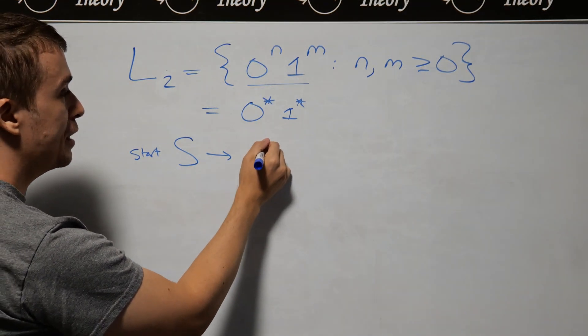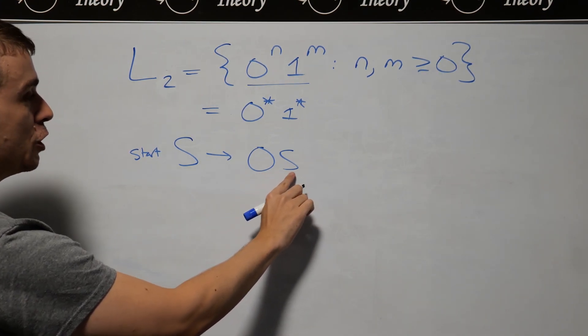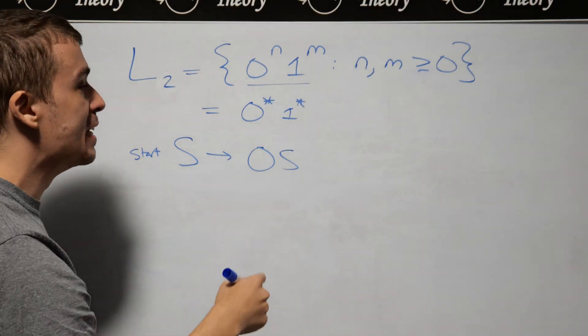So one thing that we can do is let's just make a bunch of zeros right here, by having a zero followed by S, which says you can add zeros on the front as needed.